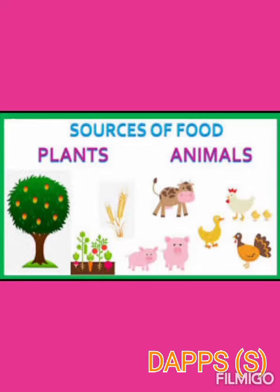Hamare paas khane ke two sources hote hai. Number one: plants. And number two: animals.